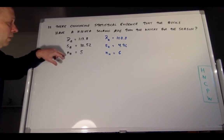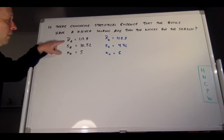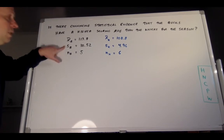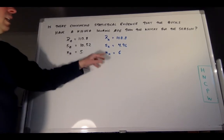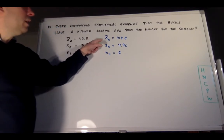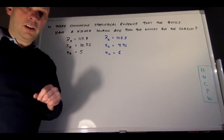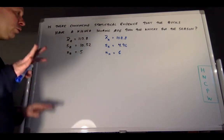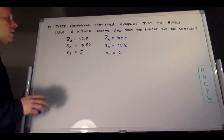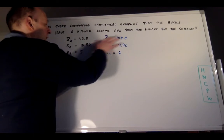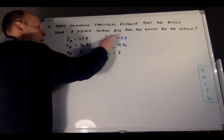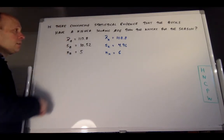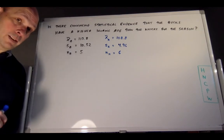I took five Bucks games randomly — that was the mean and standard deviation of those five games. Similarly, I sampled six Knicks games, with their own sample mean and standard deviation. Those are two separate samples from two independent populations. The Bucks sample averaged five points higher than the Knicks sample. Now we'll do a significance test to see if that gives us evidence of a higher scoring average for the entire season.